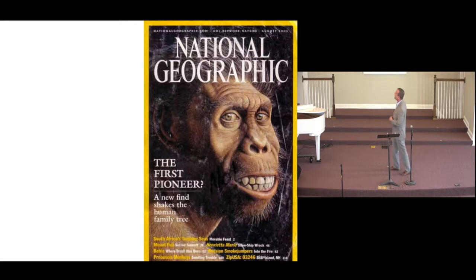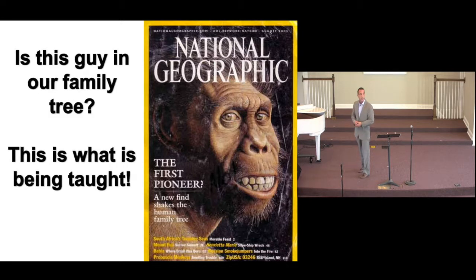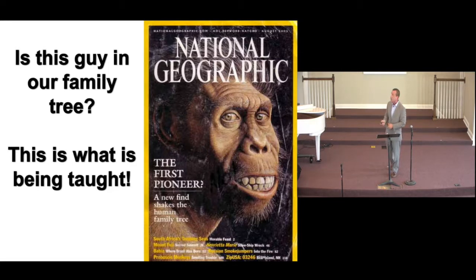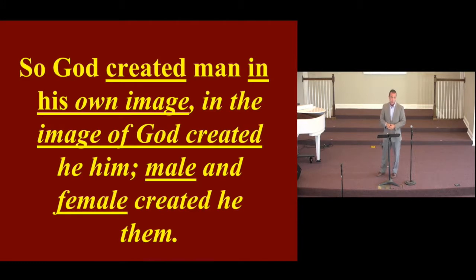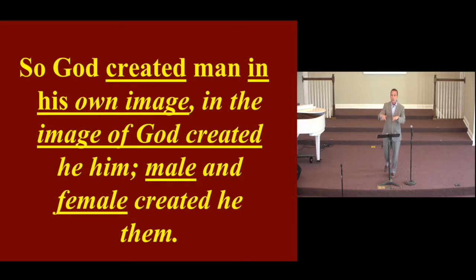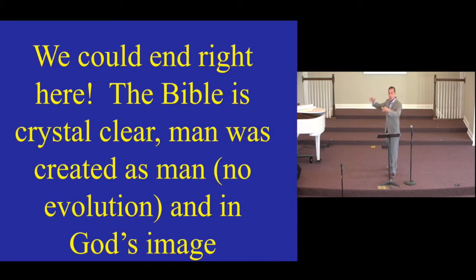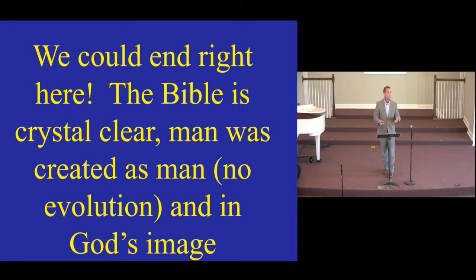This is National Geographic's 'first pioneer' — sort of human-like, but not really. My question: is this guy really in our family tree? Does this monkey-looking, sort of human guy really belong in our family tree? That's what's being taught. But the Bible is crystal clear — Genesis is crystal clear: 'God created man in his own image, in the image of God created he them, male and female created he them.' There's no evolution here, but that wouldn't be fair because you're going to run into folks who believe there is, and you need to be able to give a response.